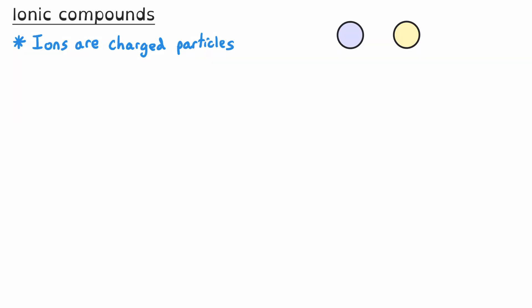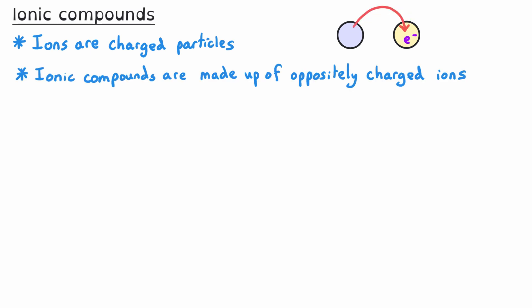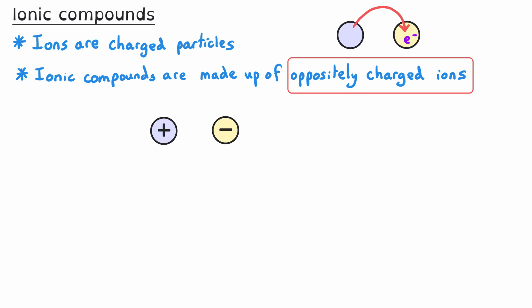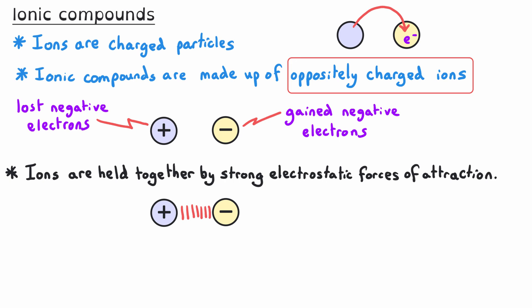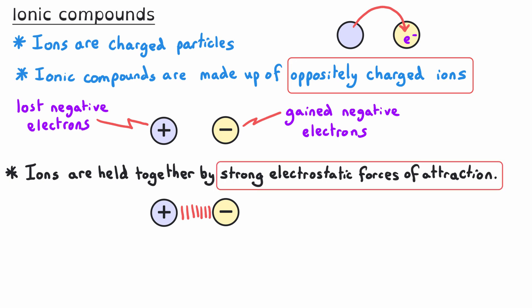Ions are charged particles and they are formed when electrons are transferred between atoms. Ionic compounds are made up of oppositely charged ions. Positive ions have been formed because they have lost negative electrons, and negative ions have been formed because those atoms gained negative electrons to become negatively charged ions. The word electrostatic means that we are referring to positively and negatively charged particles — in this case the ions that are positively and negatively charged.